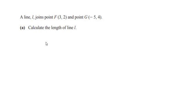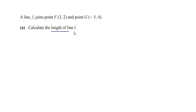Hello and welcome to my channel. In this video we are going to solve an example on straight lines. A line L joins point F having a coordinate of (3, 2) and point G having a coordinate of (-5, 4). Calculate the length of line L. Whenever they ask you to find the length of a line or distance between two points, we use a specific formula.